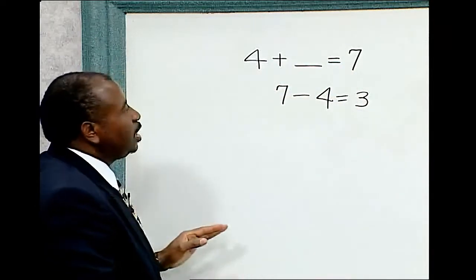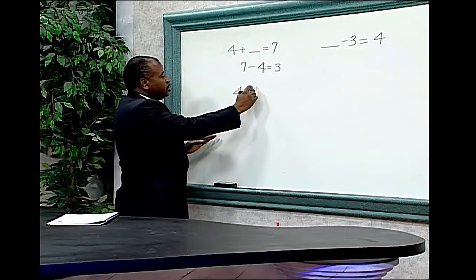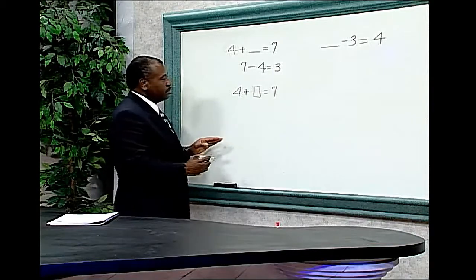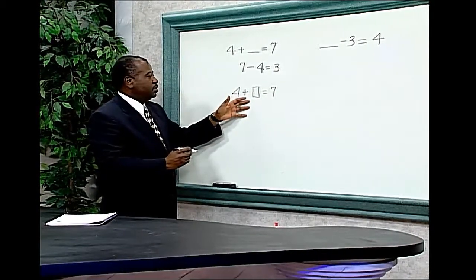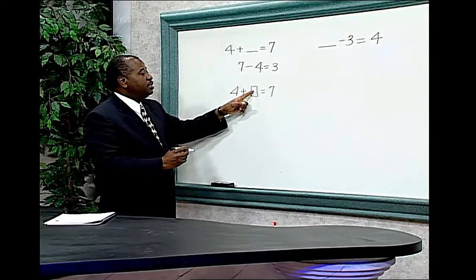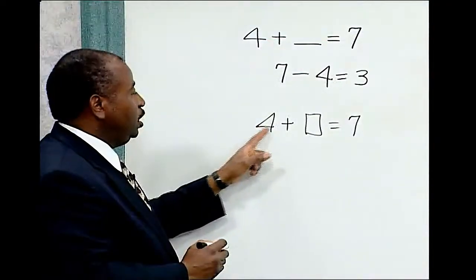This lesson can also be extended. 4 plus box equals 7. In doing the number facts, we would still subtract to find what number when placed in the box and added to 4 would equal 7.